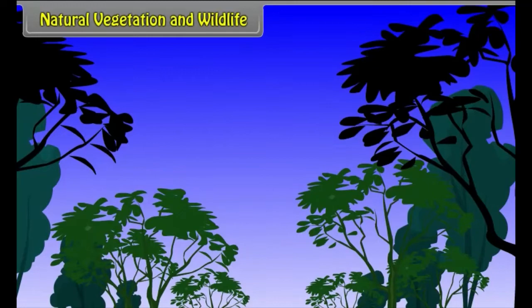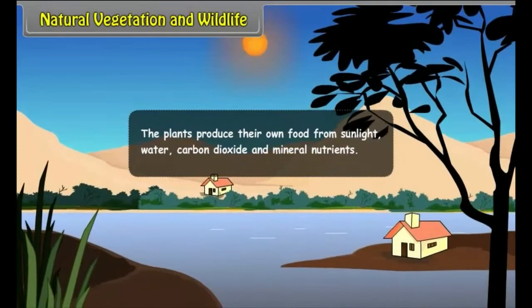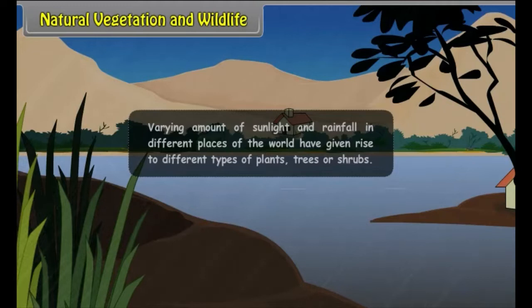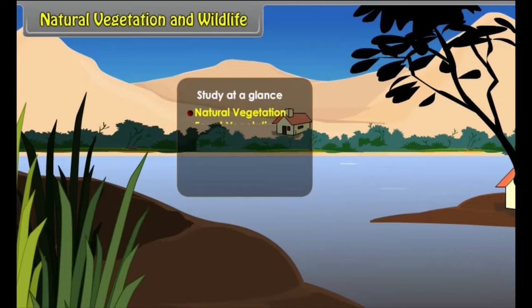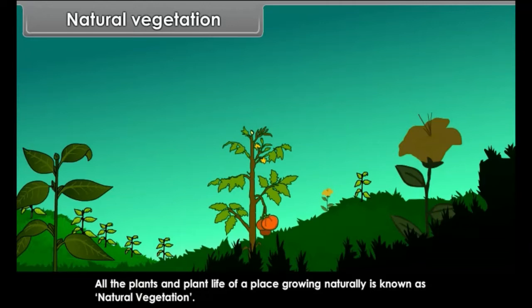Natural Vegetation and Wildlife: The plants grow under the care of nature, producing their own food from sunlight, water, carbon dioxide and mineral nutrients. Varying amounts of sunlight and rainfall in different parts of the world have given rise to different types of plants, trees or shrubs, each forming a large ecosystem occupying parts of the continent. Natural vegetation refers to all the plants and plant life of a place growing naturally.